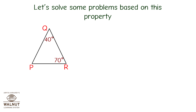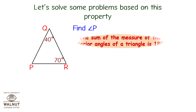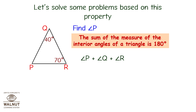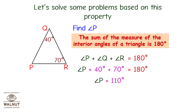Let's solve some problems based on this property. Find angle P. The sum of the measure of the interior angles of a triangle is 180 degrees. So angle P plus angle Q plus angle R is equal to 180 degrees. Angle P plus 40 degrees plus 70 degrees equals 180 degrees. Angle P plus 110 degrees equals 180 degrees. Angle P is equal to 180 minus 110, which is 70 degrees.